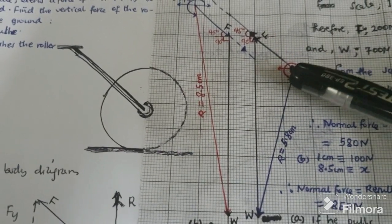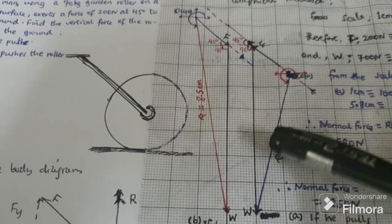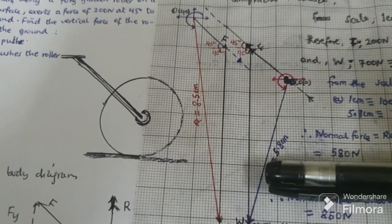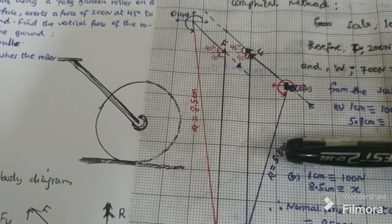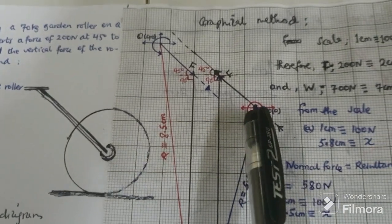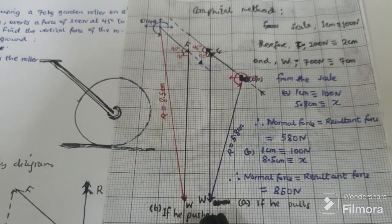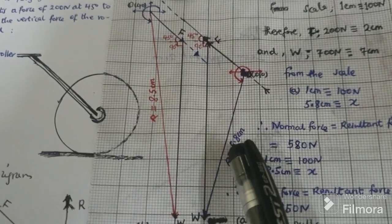Then our resultant vector is from the point O to the weight W. Our resultant vector is equal to 5.80 centimeter. Remember, the vector F is 2 centimeter and the vector W is 7 centimeter. Our resultant is 5.80 centimeter.